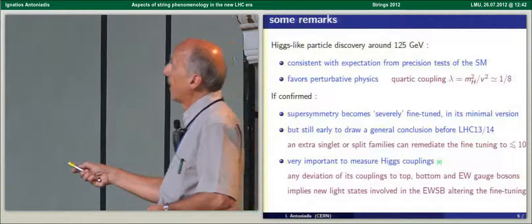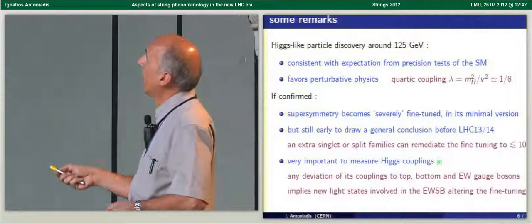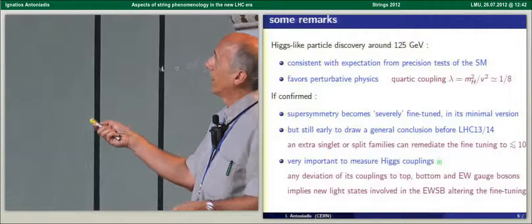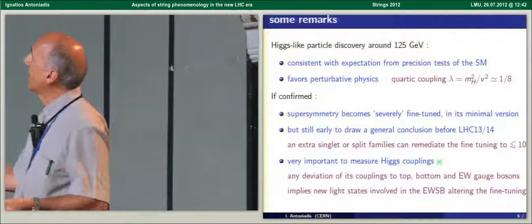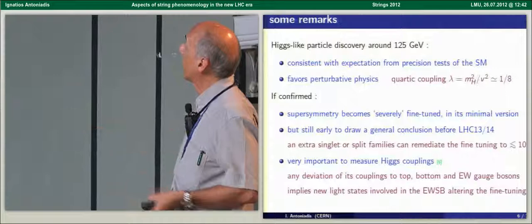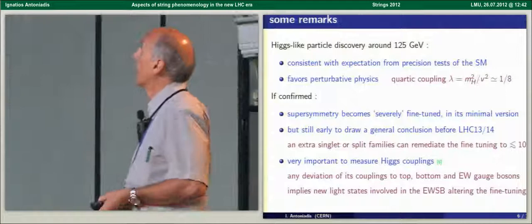Of course it is very important to measure the Higgs properties and the Higgs couplings in particular, since any deviation from the couplings that we expect in the standard model to quarks at the top-bottom and to the gauge bosons implies presumably new physics, in other words new light states. And these light states, since they couple to Higgs, they should be involved in the electroweak symmetry breaking, and therefore we will enter this conclusion for the discussion of the fine-tuning problem.